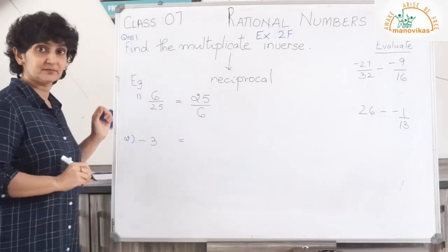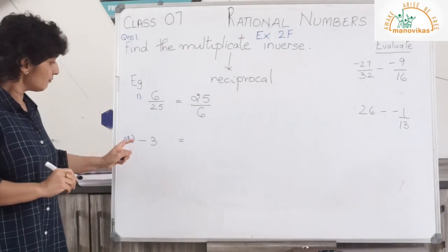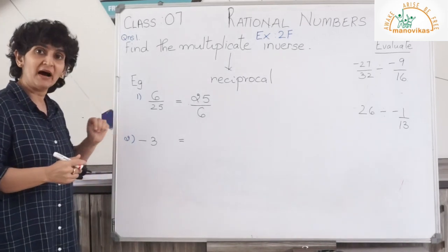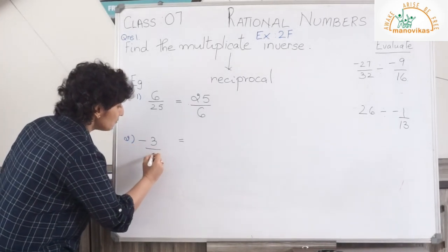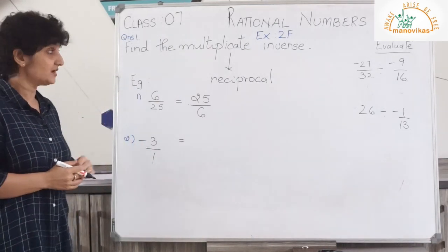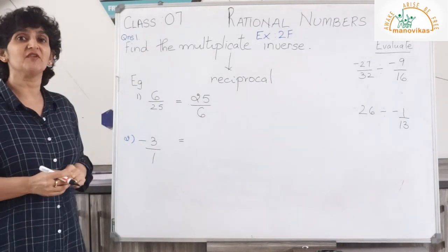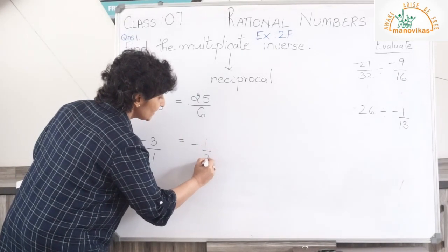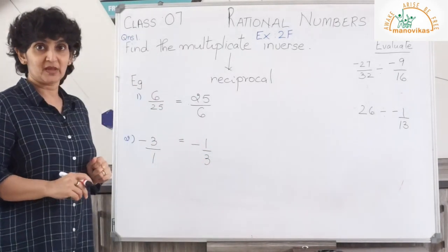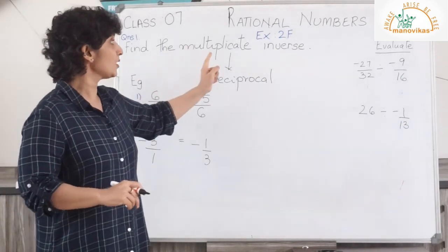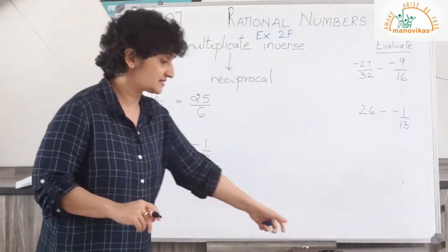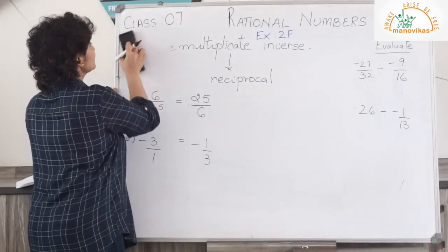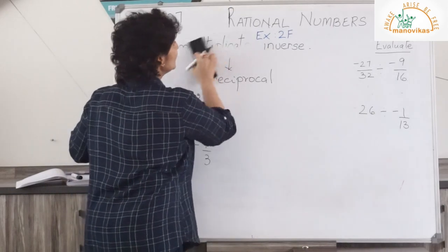My next question is minus 3. In rational numbers, we know minus 3 means minus 3 upon 1. So my multiplicative inverse will be minus 1 upon 3. I hope you have understood what multiplicative inverse means. Next, we'll go to the next question: evaluate.